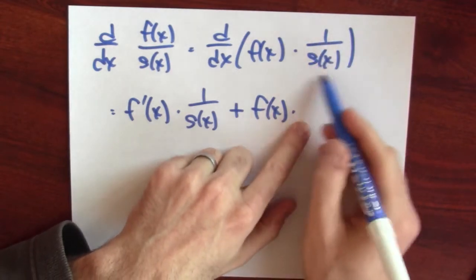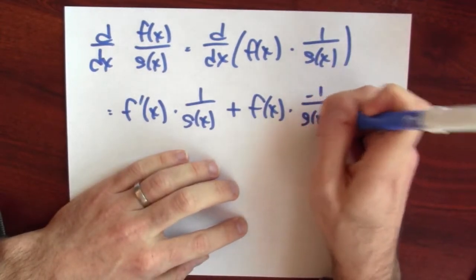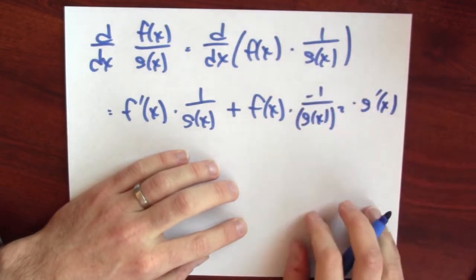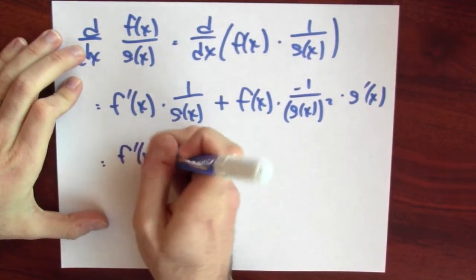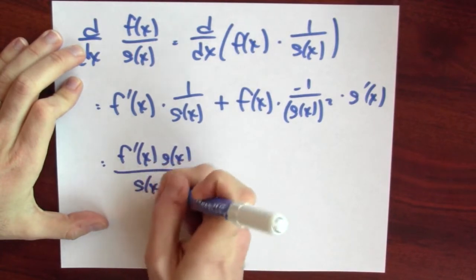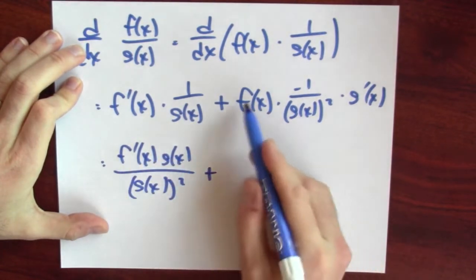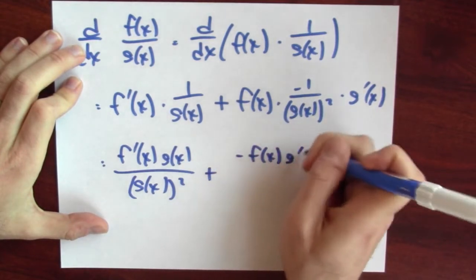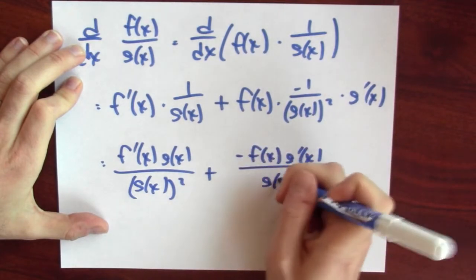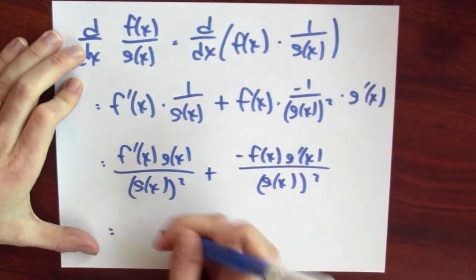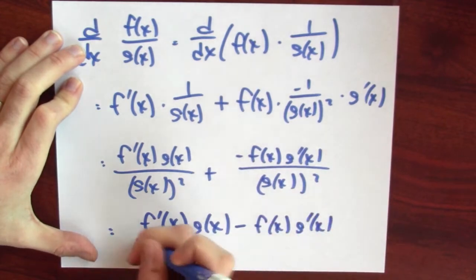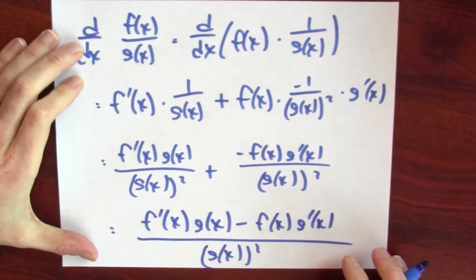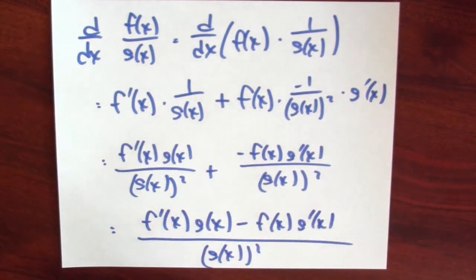So I can substitute that in as the derivative of 1 over g of x: it's minus 1 over g of x squared times g prime of x. By rearranging this, I can make it look like the quotient rule. Let's put everything over a common denominator: f prime of x times g of x over g of x squared, plus negative f of x g prime of x over g of x squared. Combining these two fractions gives f prime of x g of x minus f of x g prime of x, all over g of x squared. That's the quotient rule.